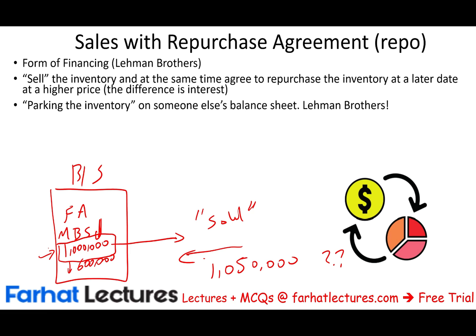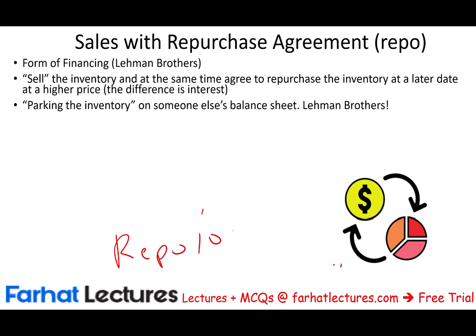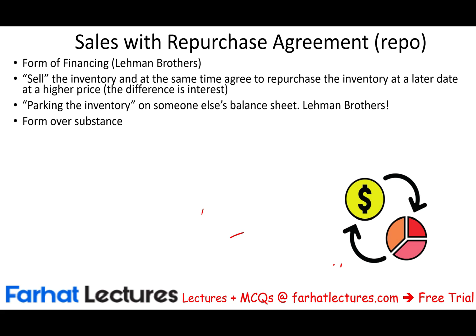This is essentially what repo is. There are more detailed rules — repo 105, if you want to read about it — with specific criteria for what qualifies. But the key principle here is substance over form. The form looks like a sale, but the substance is that you did not actually sell the inventory.